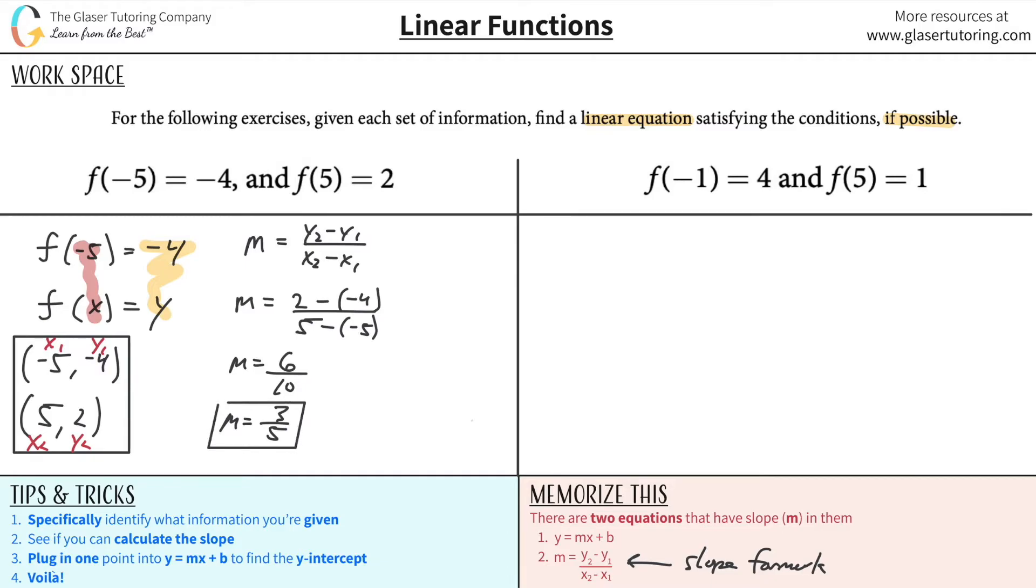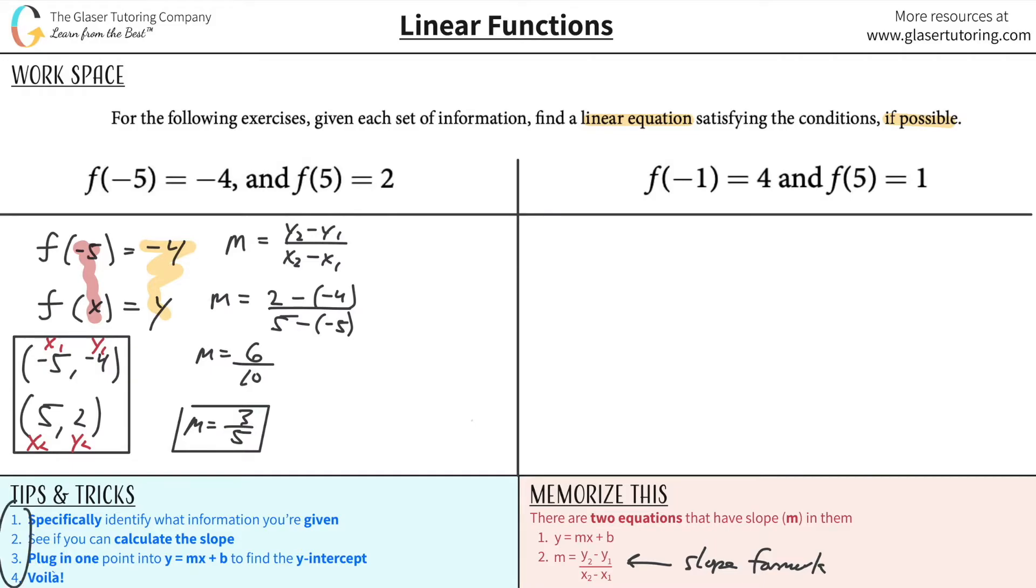So now that we have the slope, now that we have the slope, we can actually find the equation of the line. And I have a bunch of steps down here. Basically I'm following them. I calculated the slope. First, I identified what I was given. So based on this information, I was given 2 points. Then I calculated the slope from those 2 points. And now what I'm going to do is plug in one of the points that I have. Either one of these two, I don't care which one you do. Both going to be the same. Into my mx plus b formula to find the y-intercept. And then we're good to go.